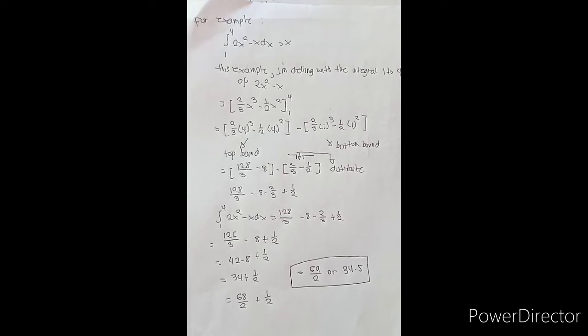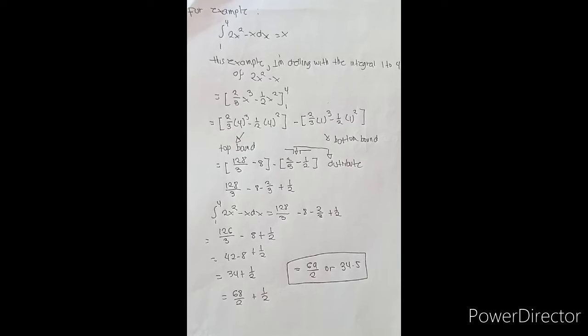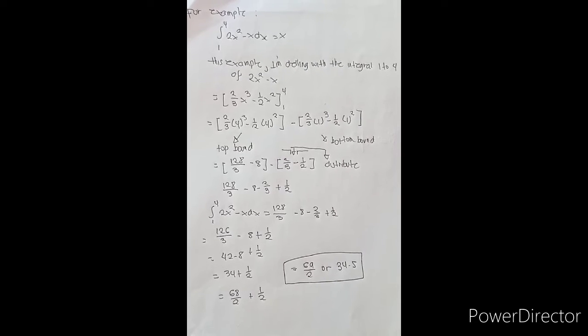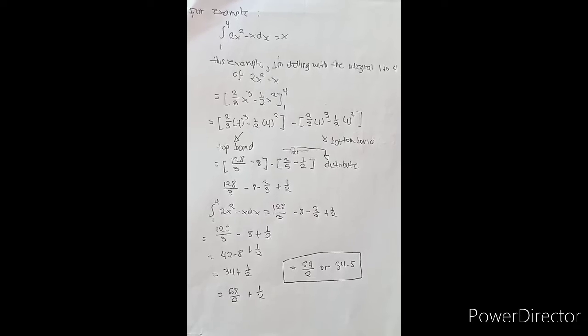So it will become (2/3)(4³) - (1/2)(4²) minus (2/3)(1³) - (1/2)(1²).